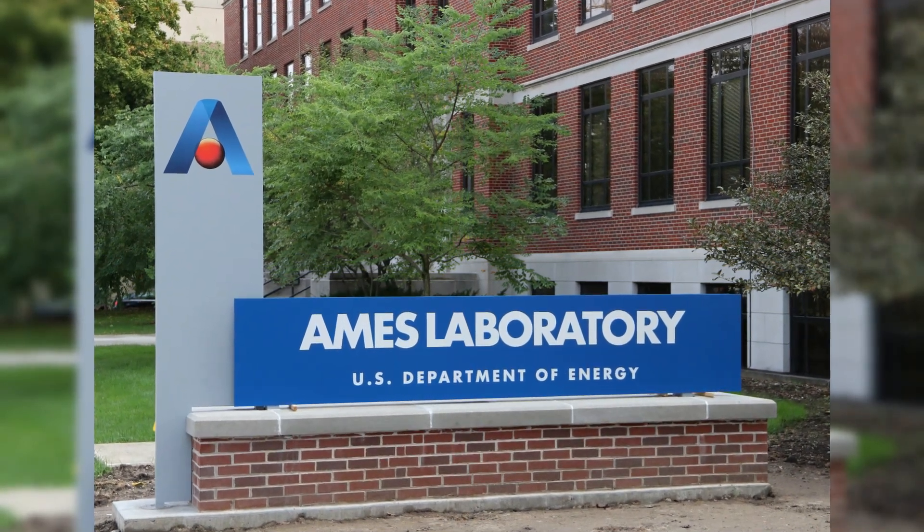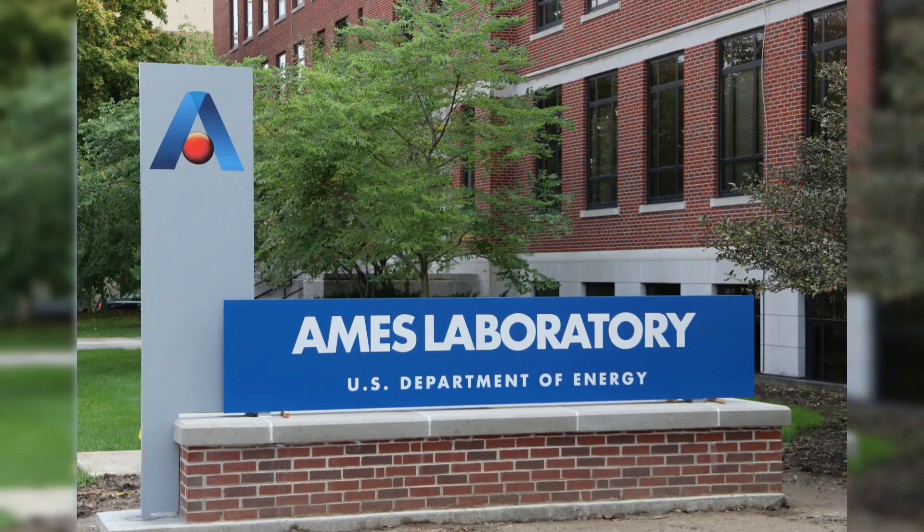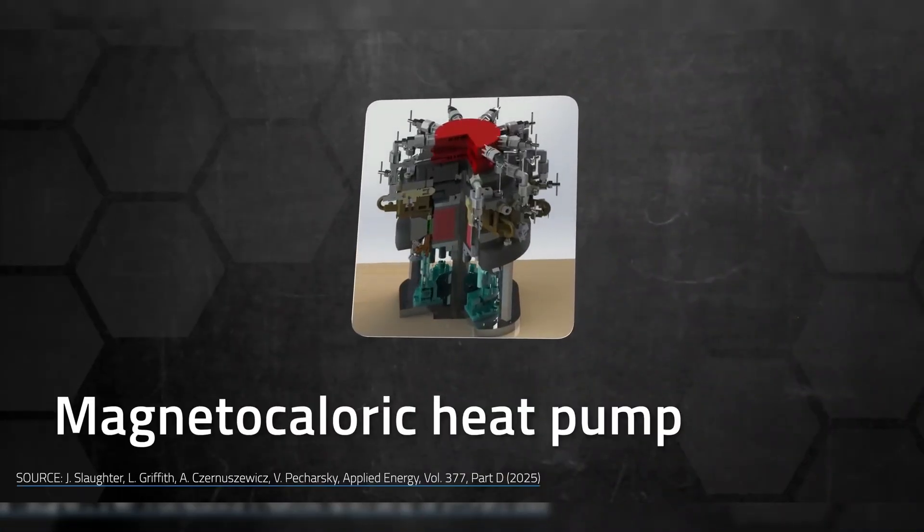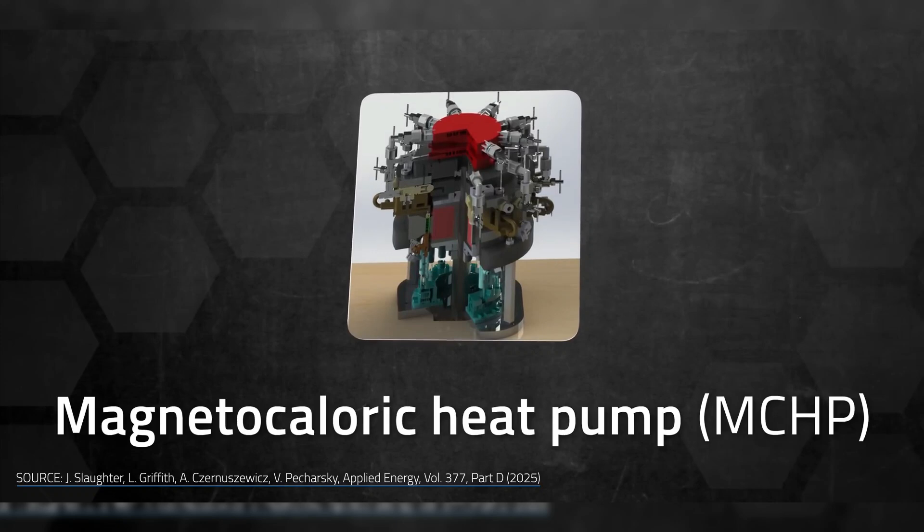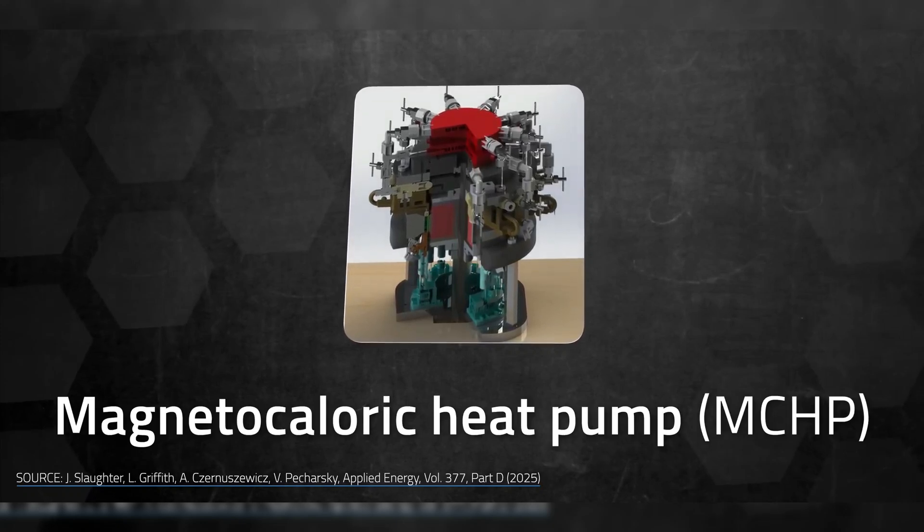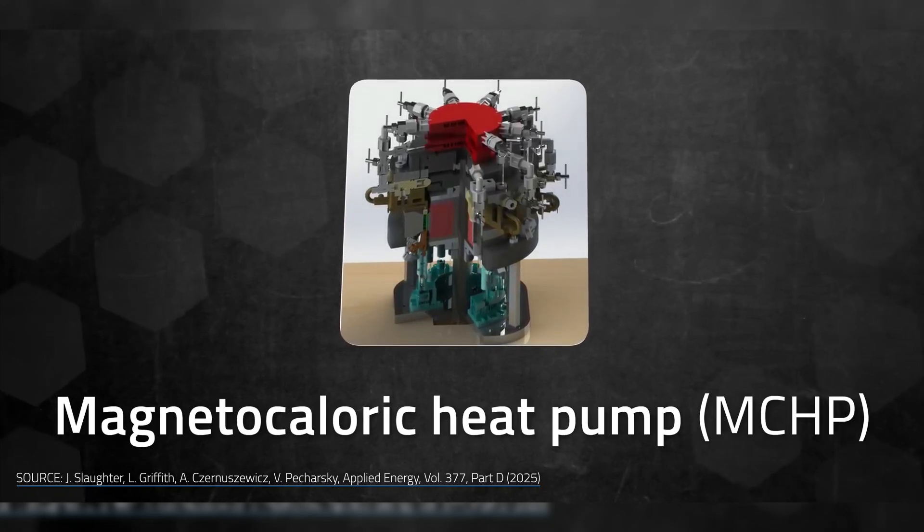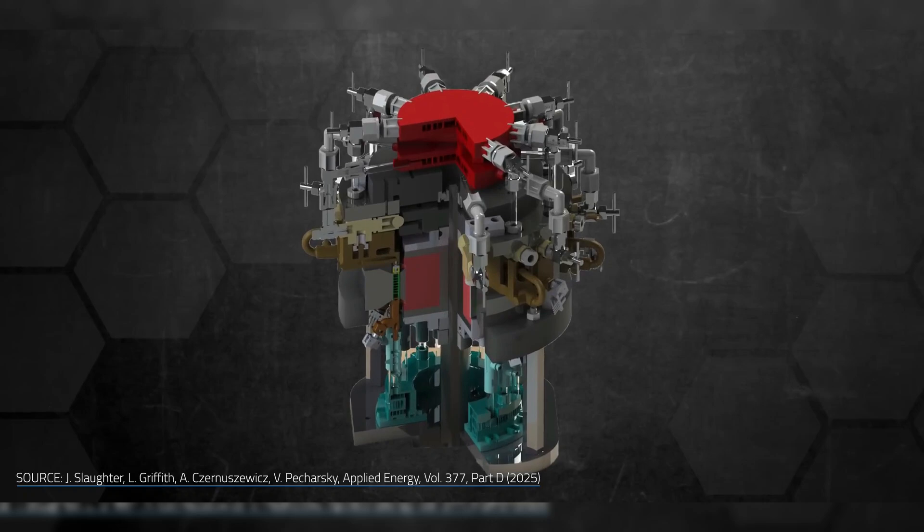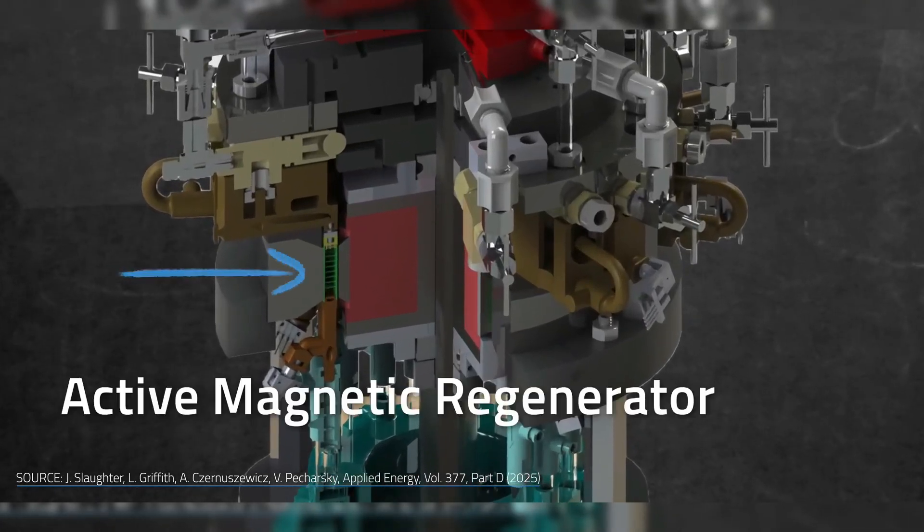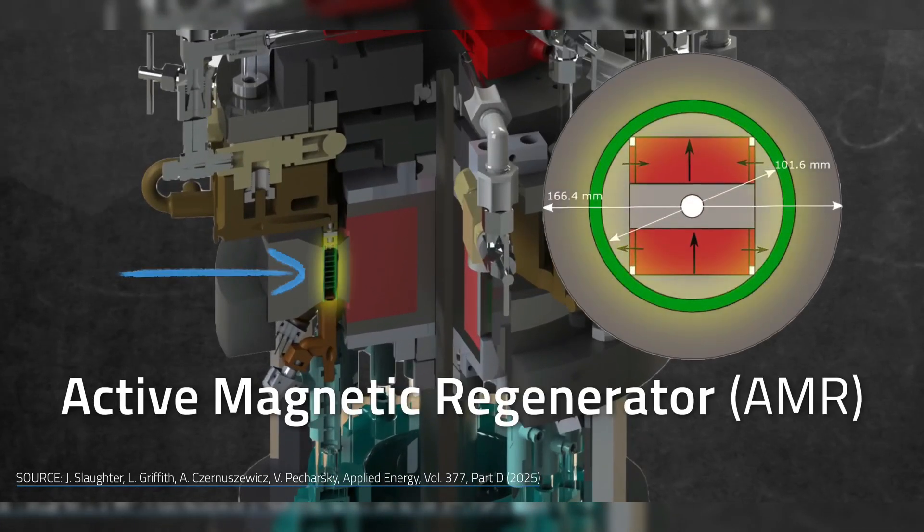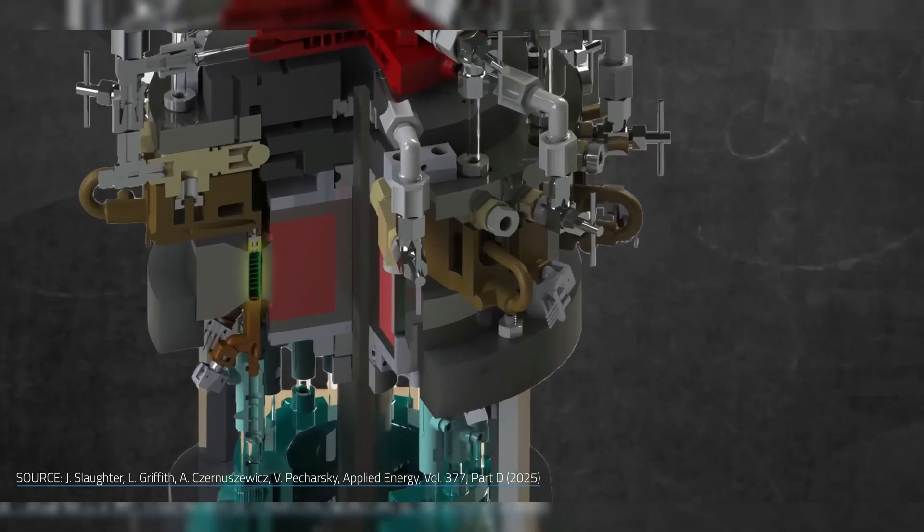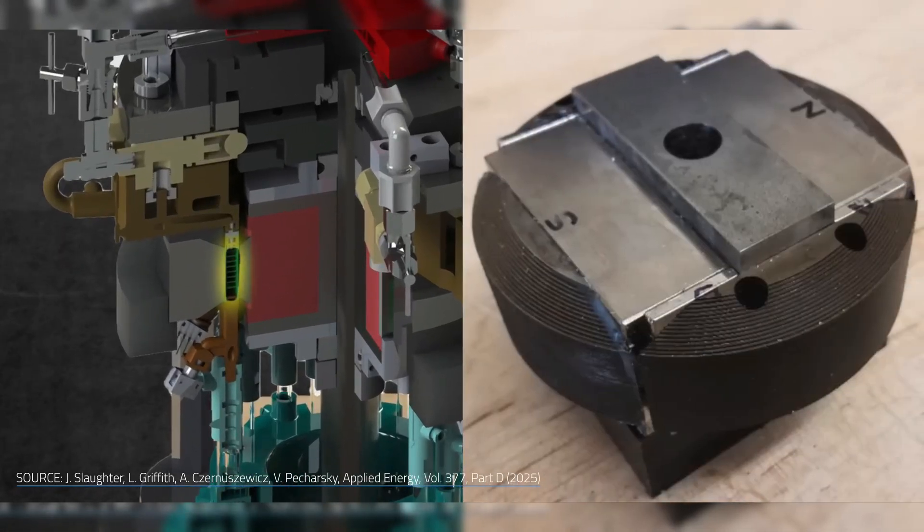In late 2024, the Ames National Laboratory in Iowa, part of the U.S. Department of Energy, announced a magnetocaloric heat pump MCHP that can match traditional systems in cost, size, and efficiency. Led by researcher Julie Slaughter, the team built a cylindrical device housing an active magnetic regenerator, AMR.